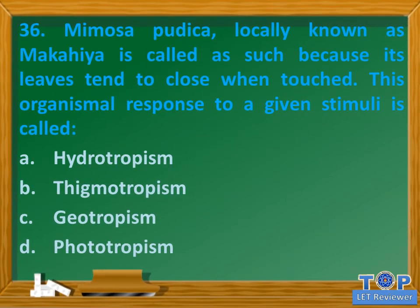Question number 36. Mimosa pudica, locally known as makahiya, is called as such because its leaves tend to close when touched. This organismal response to a given stimuli is called: A. Hydrotropism. B. Thigmotropism. C. Geotropism. D. Phototropism.